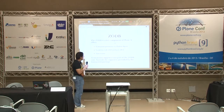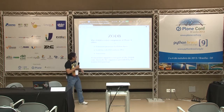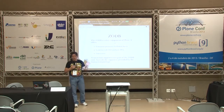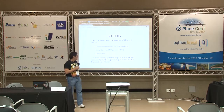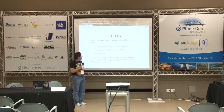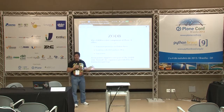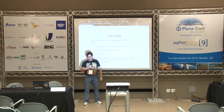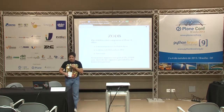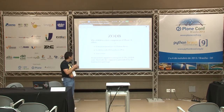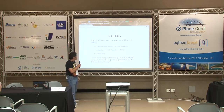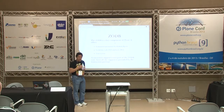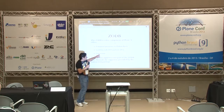ZODB is a very important component of Plone. You can have transparent persistence for Python objects, which means when you change something, it's automatically saved in the database and you don't have to do anything. It is scalable — you can use ZEO, and there's also a replication solution for Plone called ZOPE replication services, which recently was open sourced, so you can also scale horizontally and vertically. It's a very powerful database that almost nobody uses. And there are transactions.